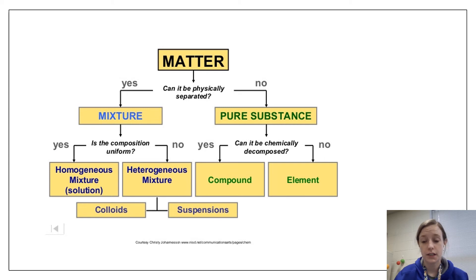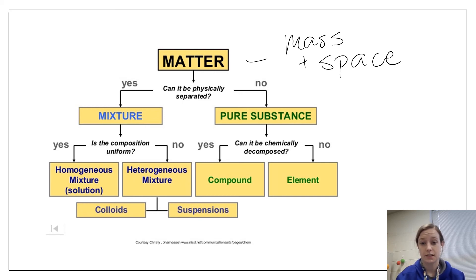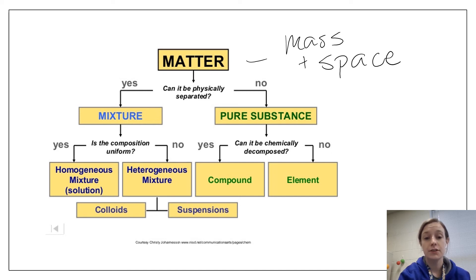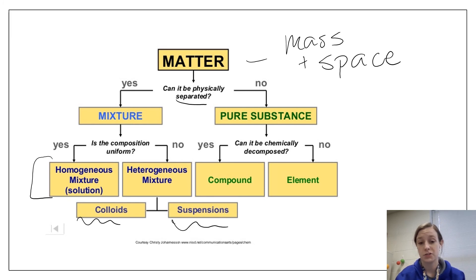The last thing we're going to cover is this organizer of matter. Matter is anything that has mass and takes up space — it has mass and volume. We can divide matter into two categories: mixtures and pure substances. Mixtures are things that can be physically separated — different materials in the same container, mixed together or dissolved. Then we look at the different types of mixtures: homogeneous mixtures (or solutions) and heterogeneous mixtures. There are also special types of heterogeneous mixtures — colloids and suspensions.